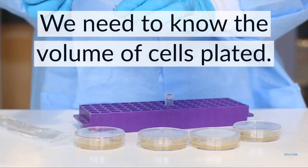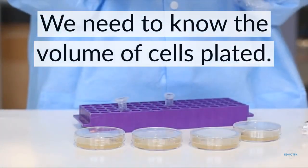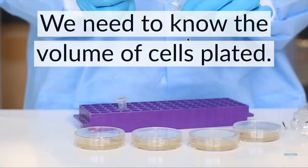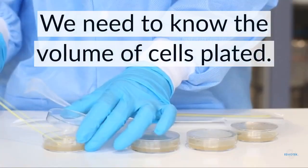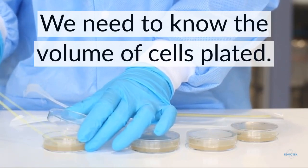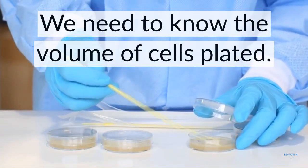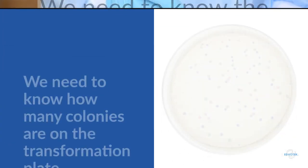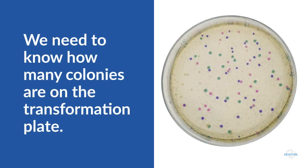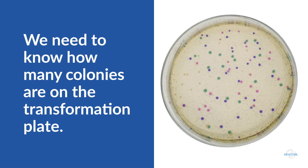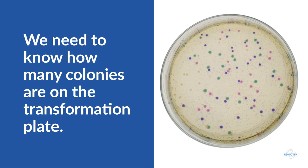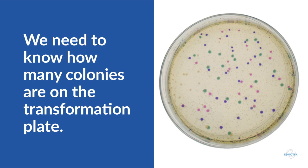The third piece of data that we need is the volume of cells plated on the nutrient agar. This is important since we don't always plate the entire volume of the recovered cells. Too much liquid on the plate can make the colonies smeary and difficult to count. Usually, researchers will plate between 100 and 250 microliters of the cell suspension. The final piece of data required is the number of colonies on the plate, since each colony represents one transformed cell. We recommend using a marker to tick off each colony on the back of the petri dish.